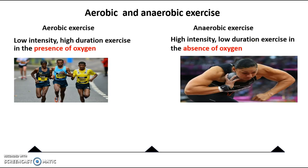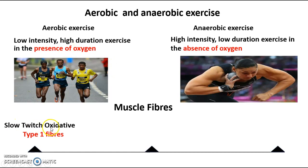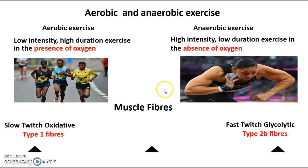It's massively important that we understand the difference between aerobic and anaerobic because depending on which type it is will dictate the muscle fibre that is predominant. For example, if we're doing aerobic exercise such as marathon running, this will need the slow twitch oxidative type 1 fibre — the first fibre we recruit that allows us to perform slow activities using oxygen. For anaerobic exercise, the fibre used is the fast twitch glycolytic fibre, also known as type 2b.